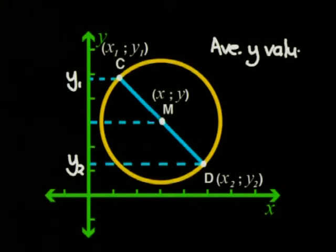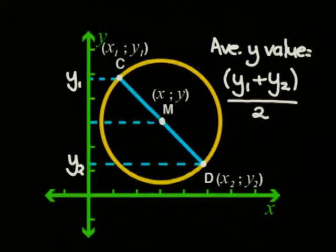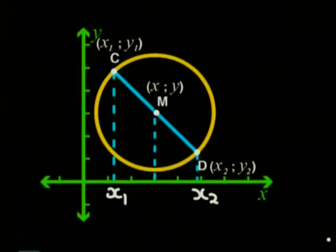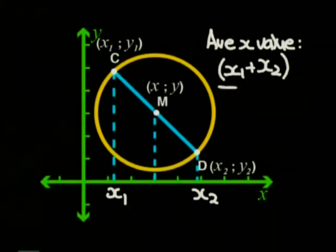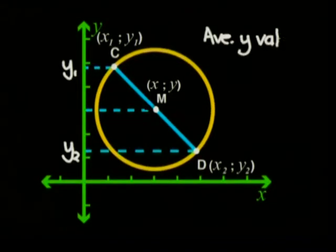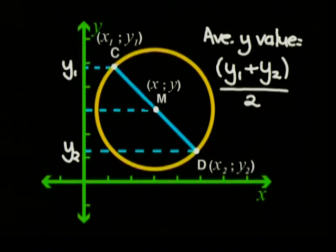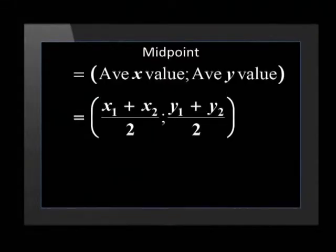That means the y-coordinate is the average of the y values. Similarly, the x-coordinate of the midpoint is halfway between x1 and x2. So to get the x-coordinate, you take the average of the x values. That means the midpoint's coordinates are just the average of the x values and the average of the y values. The average of the x values is (x1 + x2) ÷ 2, and the average of the y values is (y1 + y2) ÷ 2. So the midpoint coordinates are ((x1 + x2)/2, (y1 + y2)/2).